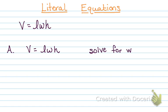So let's say I know the volume, I know the length, and I know the height, but I don't know the width. So I want to rearrange this in order to solve for W. They'll always give you the problem and tell you what to solve for. I like to use a highlighter and highlight what I'm solving for so I know I'm trying to get that one alone.